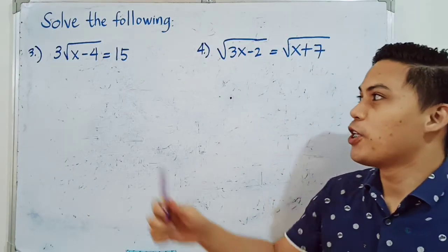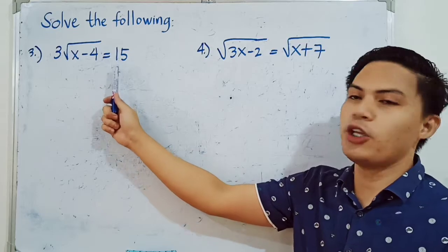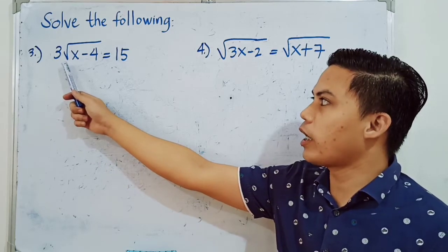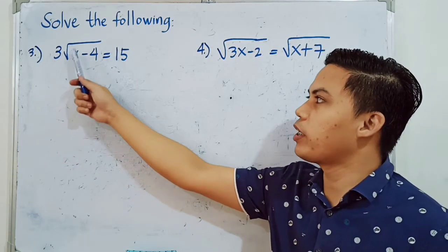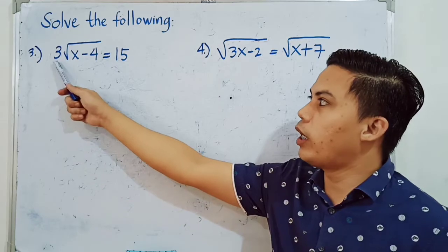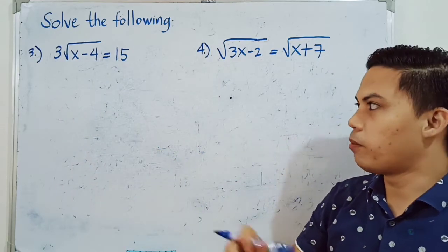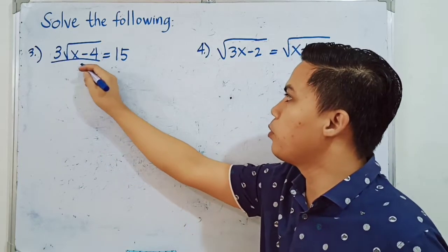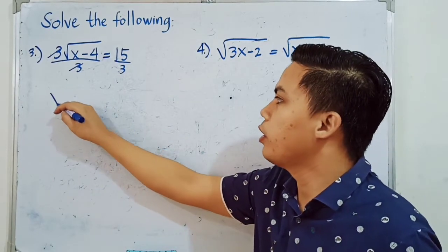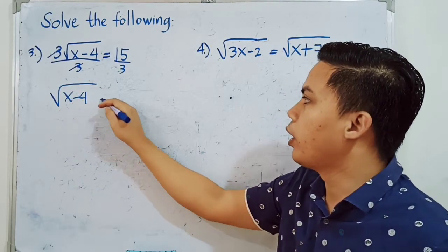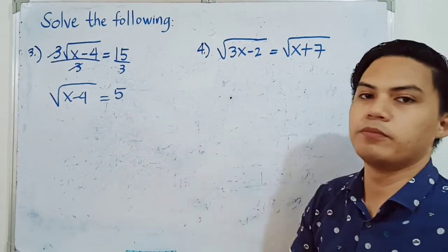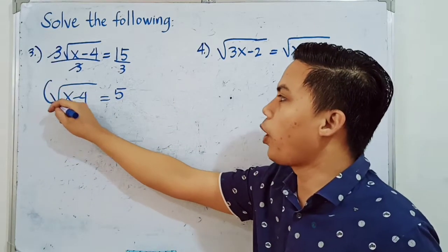For example number 3, we have 3 times the square root of X minus 4 is equal to 15. Since there is a numerical coefficient before the radical sign, we need to eliminate it first. We divide both sides by 3 to cancel out the 3. What remains on the left side is the square root of X minus 4, and on the right side we have 15 divided by 3, which equals 5.